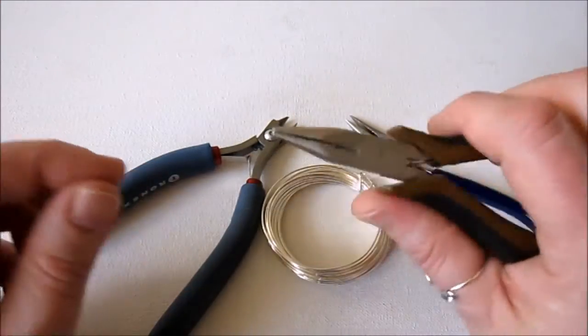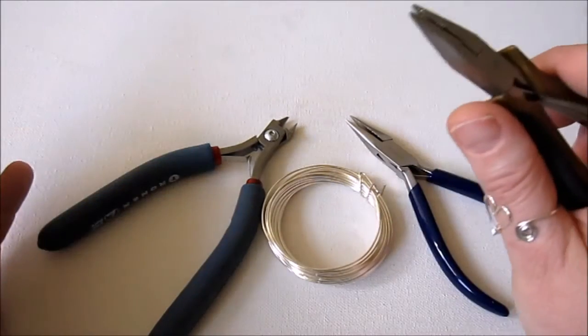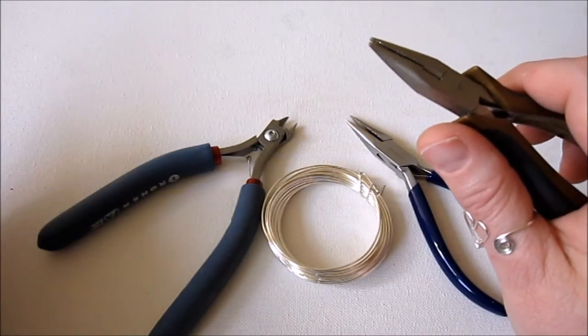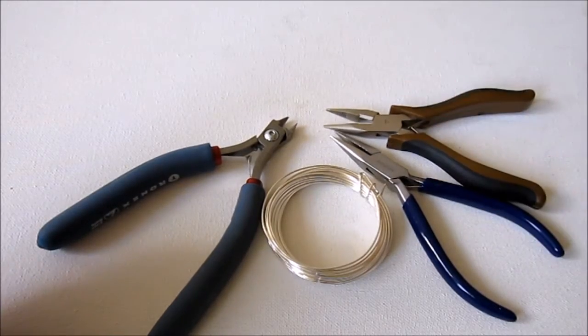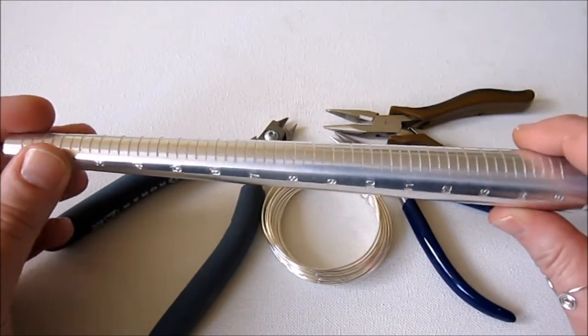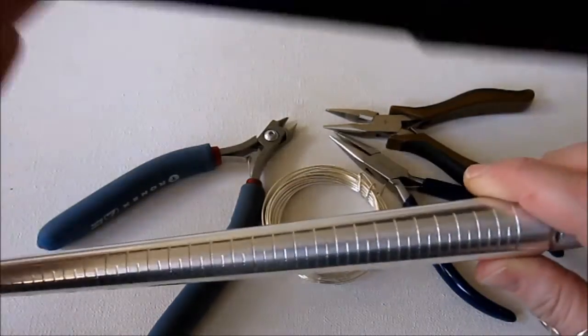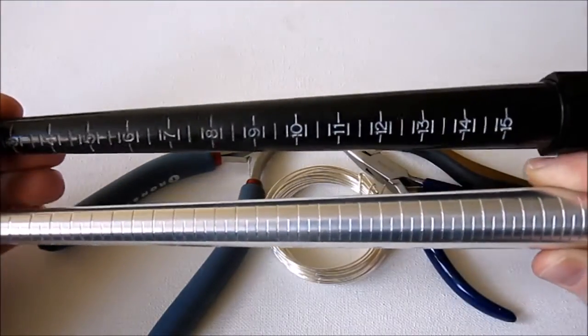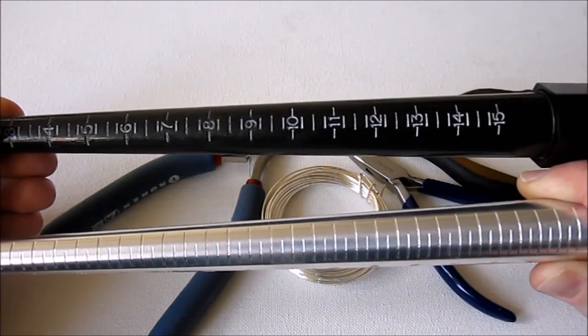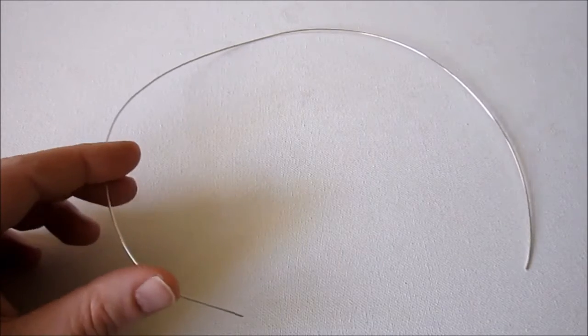I've seen people use much bigger ones. If you have a pair in your house already, just use what you have. And then, of course, you'll need a ring mandrel. This one's metal, this one's plastic. Either one is perfectly fine.